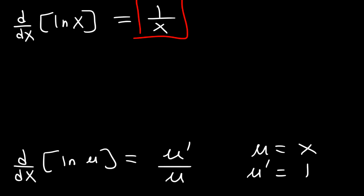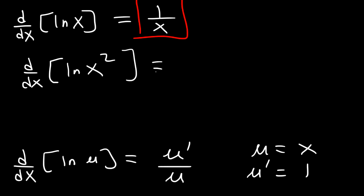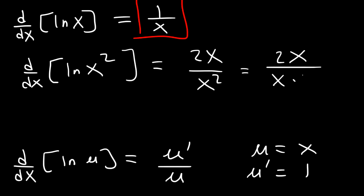Let's try another problem. What is the derivative of ln x squared? In this example, u is x squared, and u prime — the derivative of u — is going to be 2x. So we could simplify this: x squared is basically x times x, so we can cancel an x, and the final answer is 2 over x.